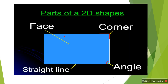Now let us look at a rectangle. The basic properties of a rectangle are that opposite sides are equal — this side is equal to this side, and this side is equal to this side. In a rectangle, as in all 2D shapes, there are four parts: face, corner, angle, and straight line.